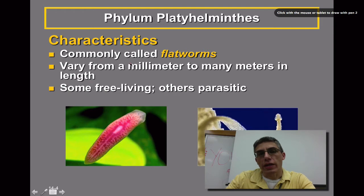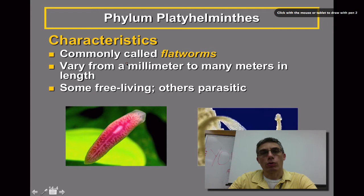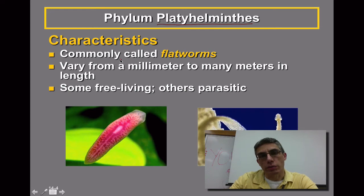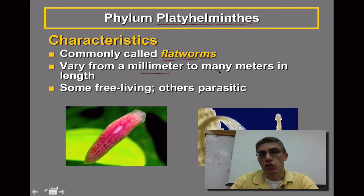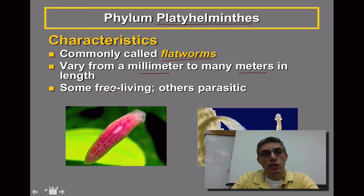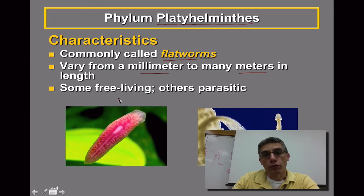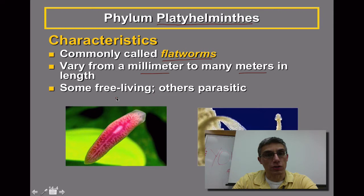There are several different phyla that belong to the group called flatworms, but we are going to focus primarily on Platyhelminthes. Some general characteristics: they are considered flatworms and can vary from about a millimeter in length to many meters in length — some tapeworms can get quite large. Some of them can be free-living and some can be parasitic. Free-living basically means they go out and consume other organisms within their environment, but they are not parasitic.